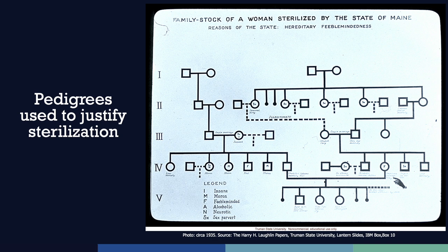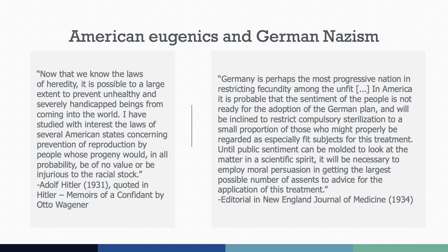Eugenicists often used pedigrees to trace the pattern of inheritance in a family and justify sterilization. This slide shows a pedigree from a woman sterilized by the state of Maine. Eugenicists scored family members and traced the lineage of defective as well as superior individuals. Pedigrees traced traits such as immoral behavior, degeneracy, criminality, disease, shiftlessness, intelligence, and feeble-mindedness, giving the impression that they were inherited genetically. Environmental factors such as poverty and access to education — which may provide a much more likely explanation for why criminality or low intelligence seems to run in a family — were largely ignored. While there was essentially no sound scientific basis for the genetic inheritance of these types of characteristics, the creation of pedigrees helped establish these ideas as legitimate science.